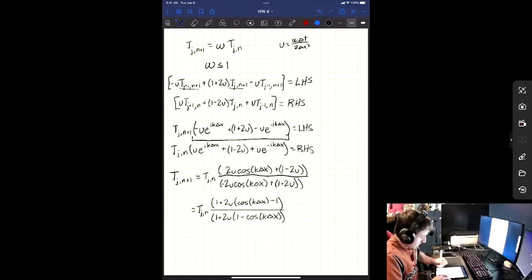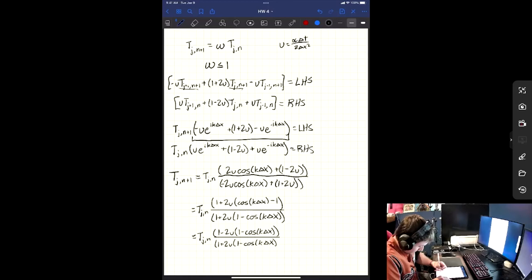So now we can rewrite this as, we can rearrange it so that we can pull it a negative. So we'll have 1 minus 2u. So that looks the same on the numerator and the denominator. So we have 1 cosine of k delta x over 1 plus 2u, 1 minus cosine of k delta x.